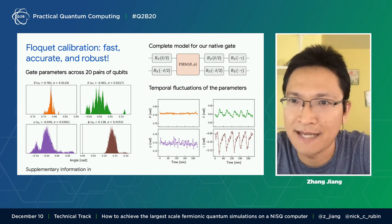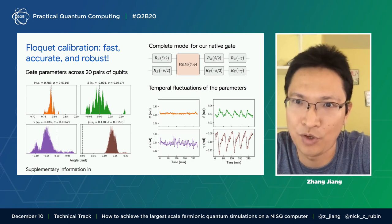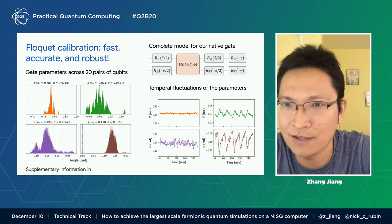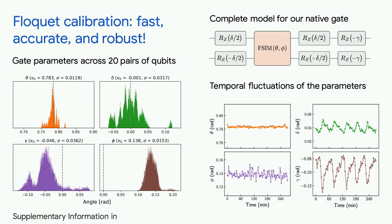So the gate we need to calibrate is this model on the upper right side of the slide, where we have single-qubit phases delta and gamma, and two-qubit parameters theta and phi. So we see a lot of fluctuations in these parameters.